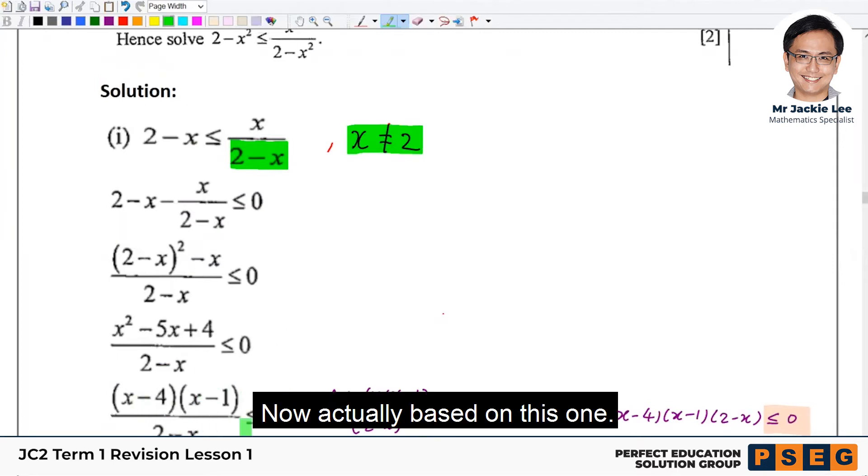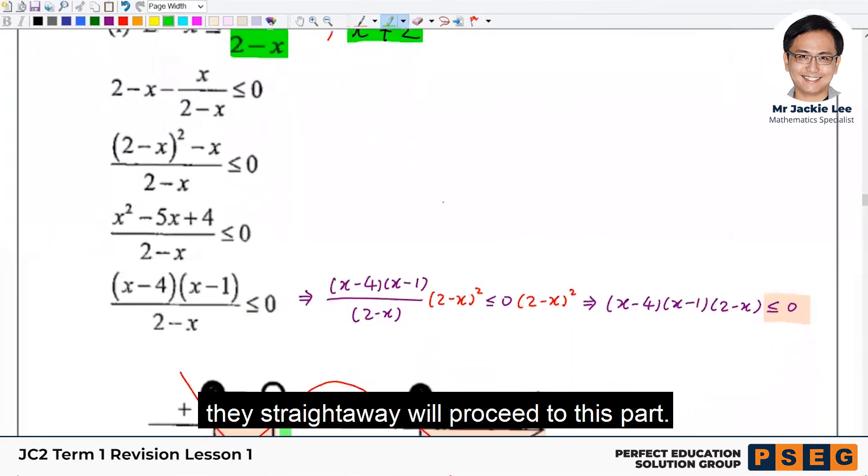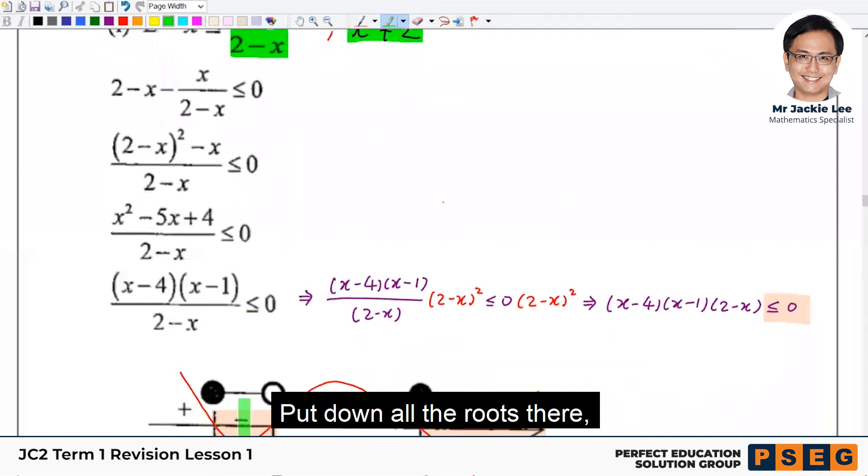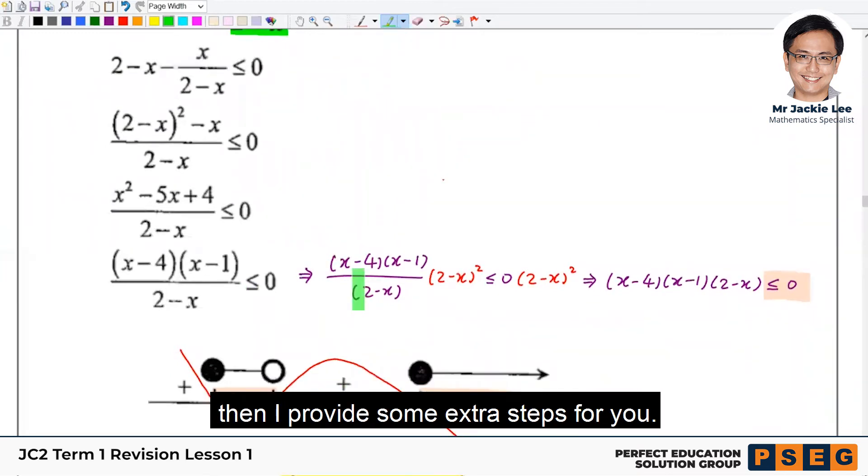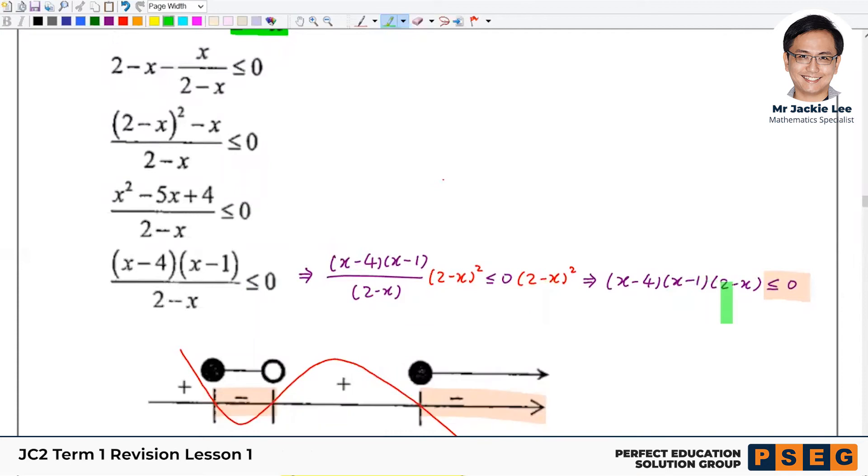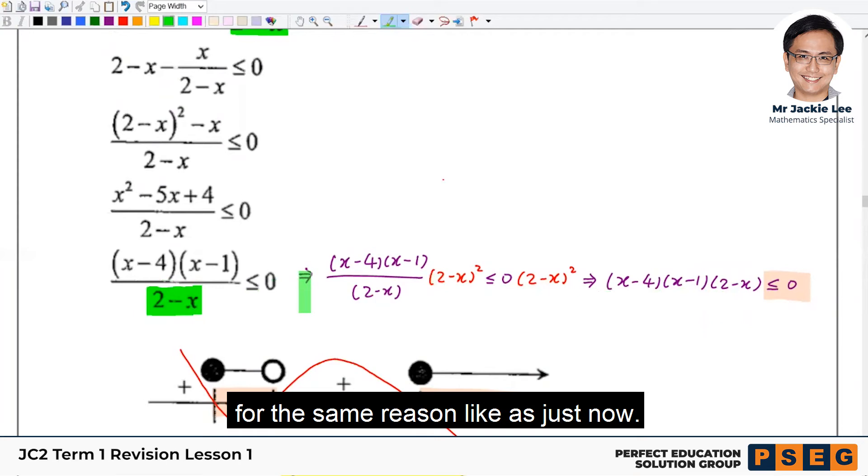Now, actually based on this one, if you look at the marking scheme, they straight away will proceed to this part. They put down all the roots there. Then somehow they manage to determine which part is positive, which part is negative. But in the event you cannot do that, then I provide you some extra steps for you. And the extra steps will be, anyway at this moment, this one we still cannot cross multiply. For the same reason, like just now. Cannot cross multiply.